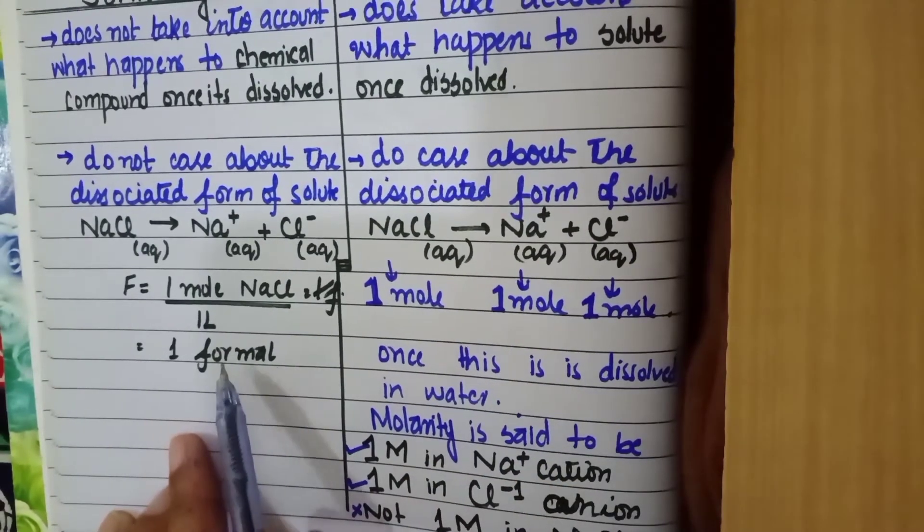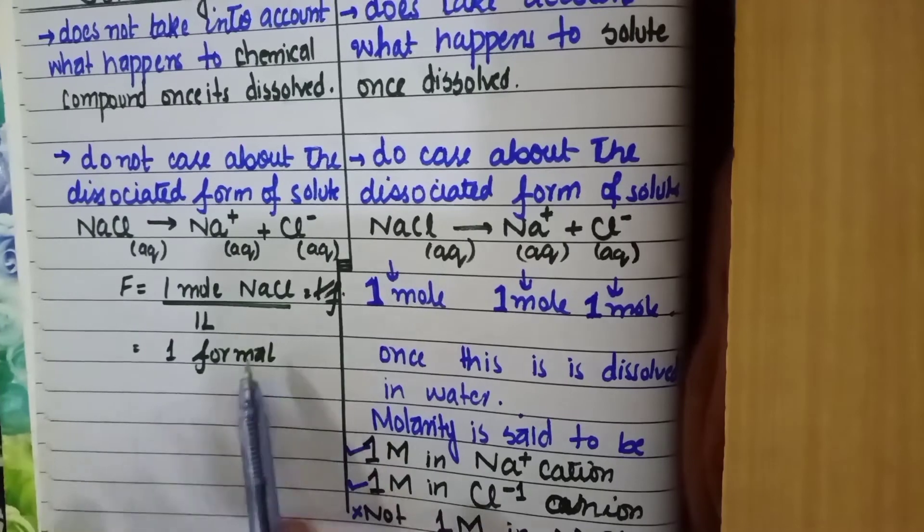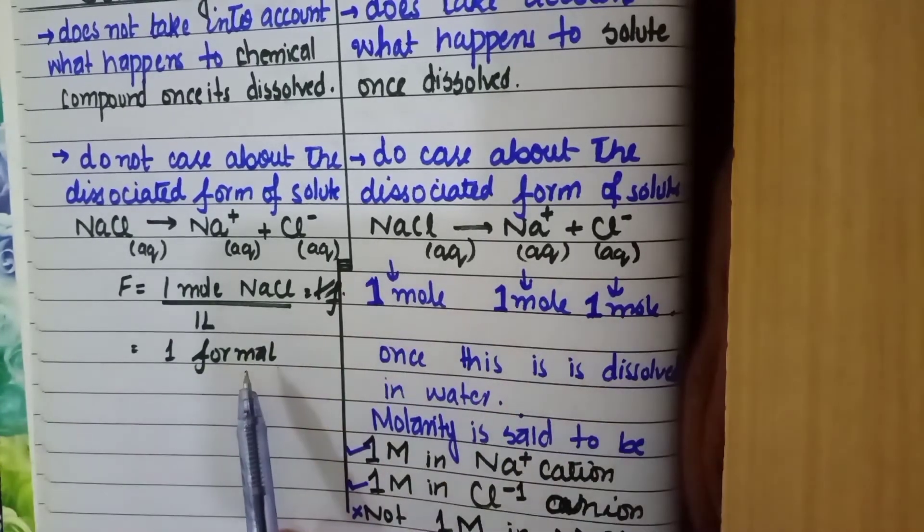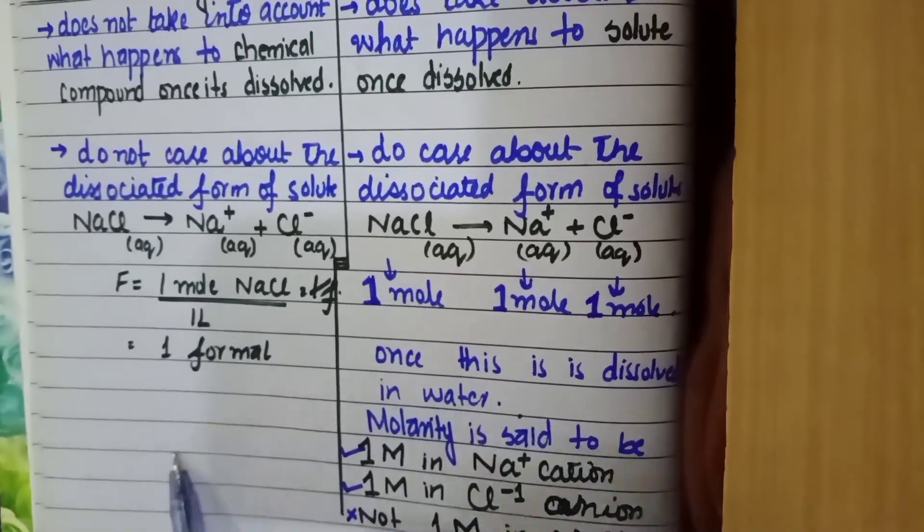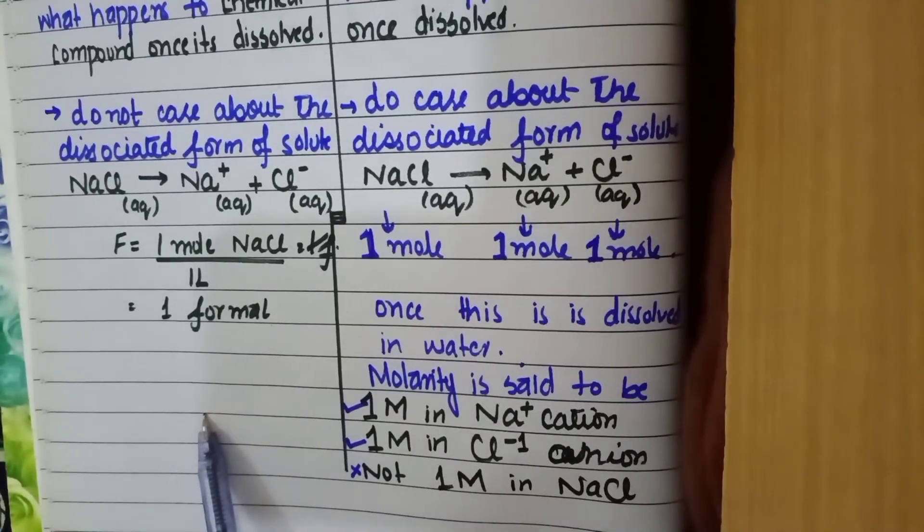Over here, it is not considering the end consequence; rather, it is stating it as a whole thing, that is one mole of NaCl. This is the only difference between formality and molarity, and that's why we have both different terms.